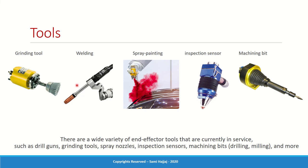Tools as end effectors come in a variety of options: grinding tools for surface treatment, welding guns for welding operations, spray painting nozzles for spray painting robots, sensors for inspection, and machining bits like drill bits for machining robots. The choice of tool ultimately depends on the robot's purpose.